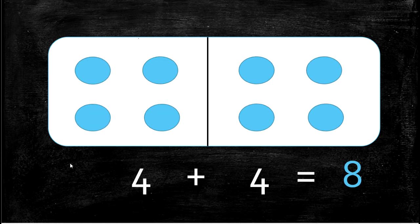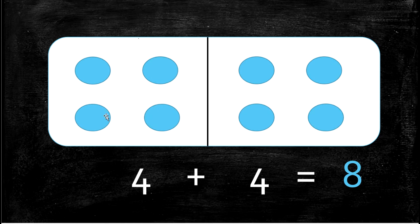Our next double is 4 plus 4 equals 8. We have 1, 2, 3, 4 plus 1, 2, 3, 4 — equals how many all together? 1, 2, 3, 4, 5, 6, 7, 8. 4 plus 4 equals 8.